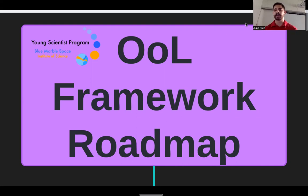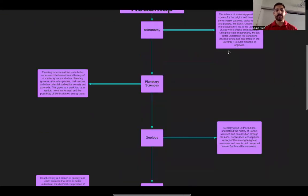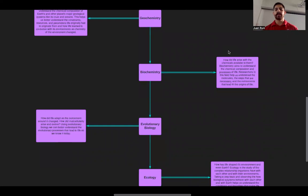How did Earth originate in the solar system? And working together, we can do a better job at this. So I made this giant roadmap from astronomy, planetary science, geology, geochemistry, biochemistry, evolutionary biology, and ecology.